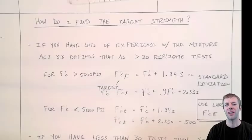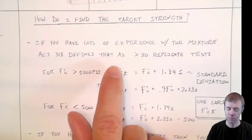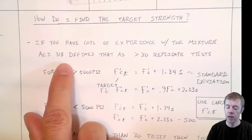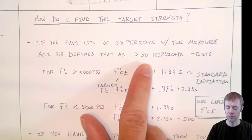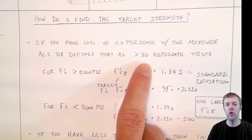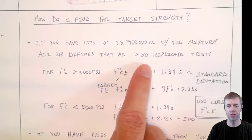Okay, enough with this theory. Let's get to some numbers. How do I find my target strength? If you have lots of experience with a mixture, ACI 318, that's the building code, defines that you have at least 30 or more than 30 replicate tests. That means you've made 30 different batches of the concrete, you've tested all 30 of those batches and based off that information you've determined a mean or an average and a standard deviation.